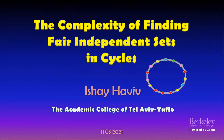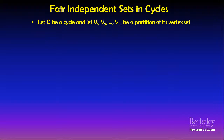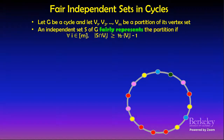I would like to tell you about the complexity of finding fair independent sets in cycles. Suppose you're given a cycle graph G and a partition V_1 up to V_M of its vertex set. We're interested in an independent set of the cycle G that includes roughly half of the vertices of every part of the given partition.